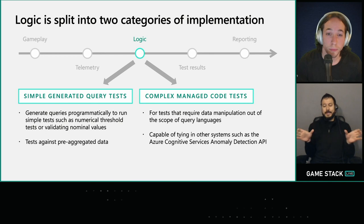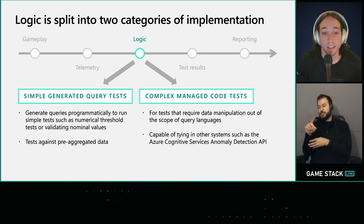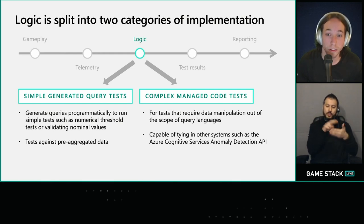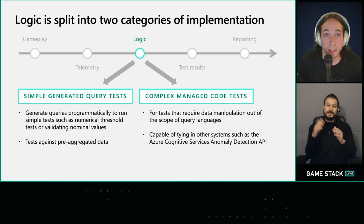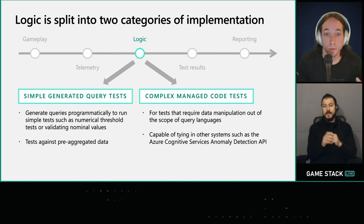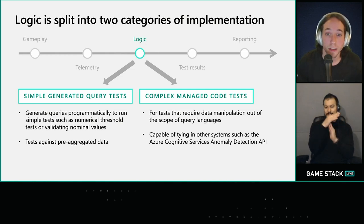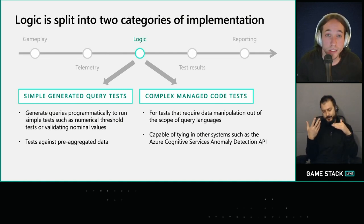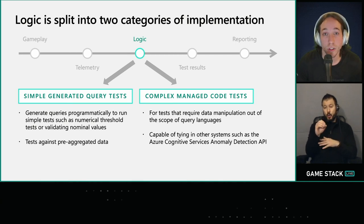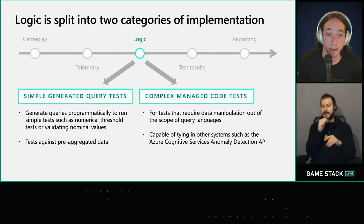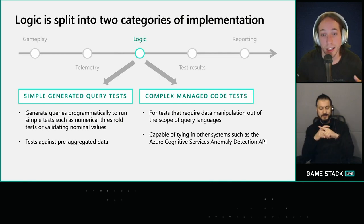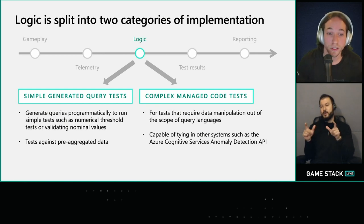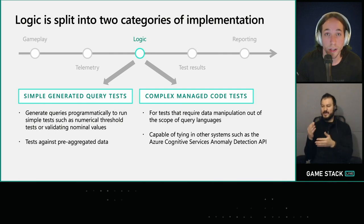We split our logic into two categories of implementation: simple query tests and managed code tests. A simple query test is exactly what it says — it's a test that validates the results of a query. We generate these queries programmatically based on tester-defined configurations. An example would be to test the top speed that players can achieve in a race — if a player hits a speed that should be impossible, we would fail the test case. Configuring this would be as easy as selecting the event to look at — race complete — the feature to test — top speed — and an allowable threshold, say 400 miles per hour. Our system would then generate and run Kusto queries to test the scenario on a recurring schedule. Sometimes we need to implement more complex cases and look beyond query languages to use managed code — tests that cannot be evaluated through simple queries and require deeper data manipulation.